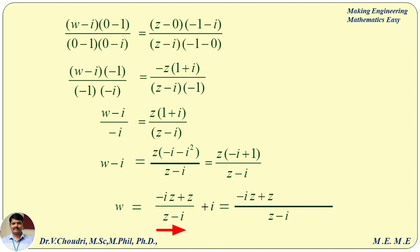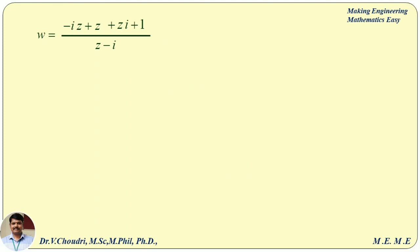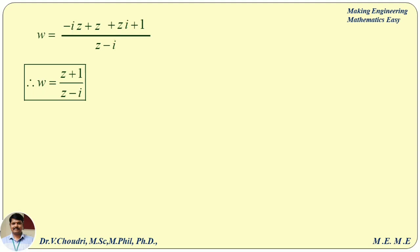Here, minus i squared equals plus 1. After applying minus i squared equal to plus 1, w changes to this form. Looking at the numerator: minus i times z plus zi — both will cancel. Therefore, w equals (z plus 1) divided by (z minus i). This is the required bilinear transformation.